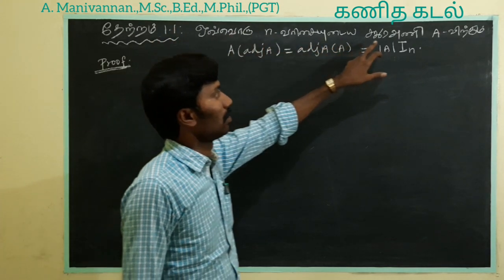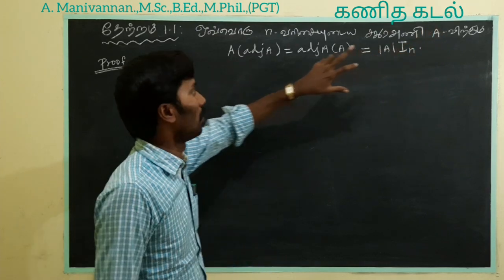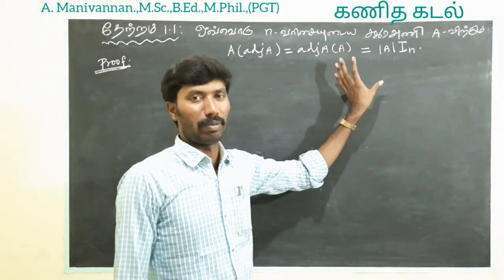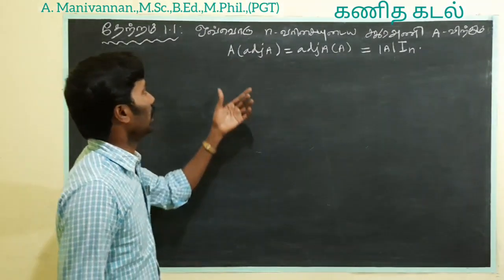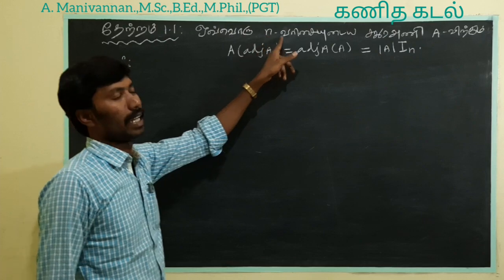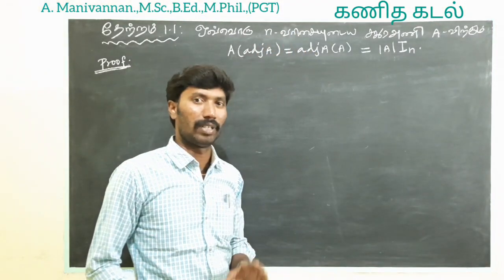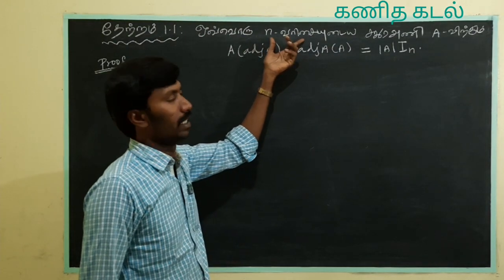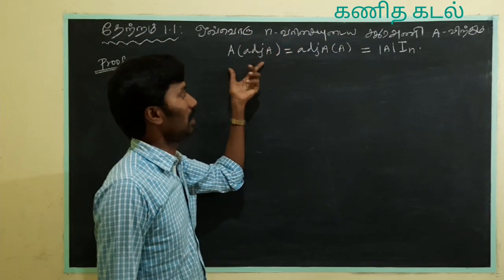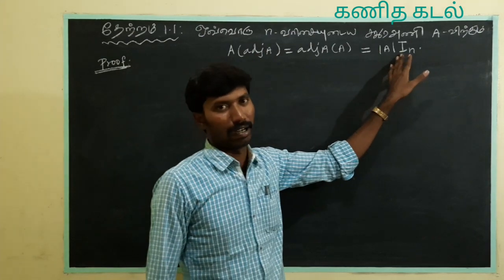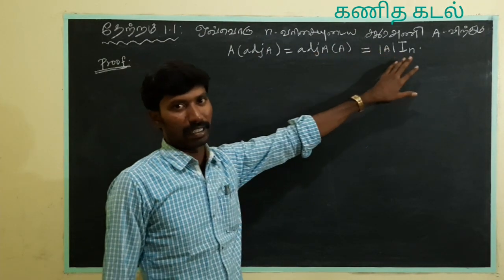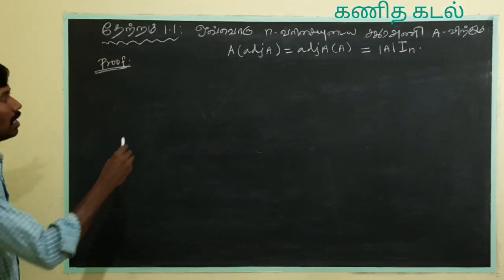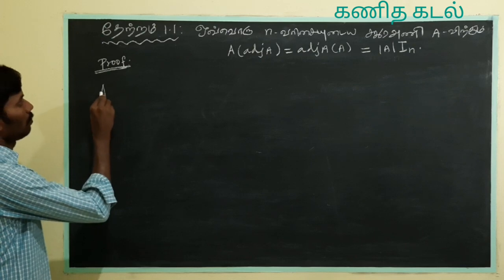For every square matrix of order n, this is true. What we want to say is that, whether it is 2 by 2 or 3 by 3, A is a square matrix — 3 by 3.